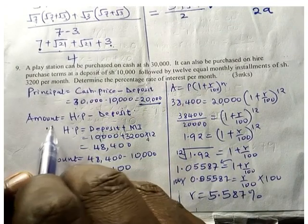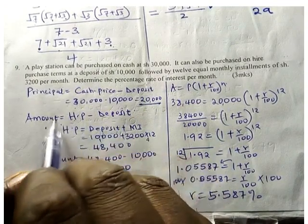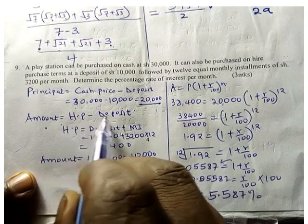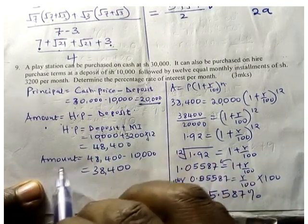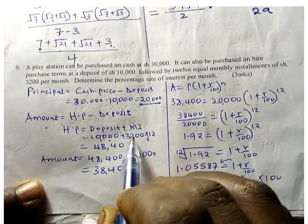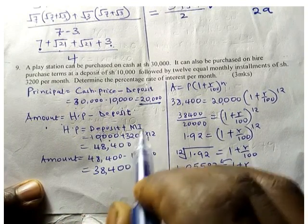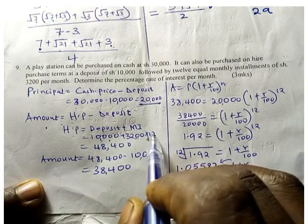Amount is equal to hire purchase minus deposit. To get the hire purchase, it is monthly installments per month times the number of months plus the deposit.